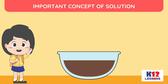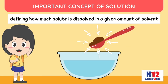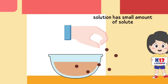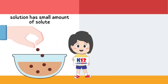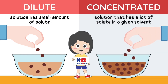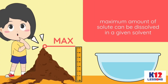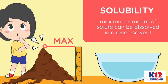One important concept of solution is defining how much solute is dissolved in a given amount of solvent. This is called concentration. If the solution has a small amount of solute, it is described as dilute, while concentrated describes a solution that has a lot of solute in a given solvent. There is a certain maximum amount of solute that can be dissolved in a given solvent. This maximum amount is called the solubility.